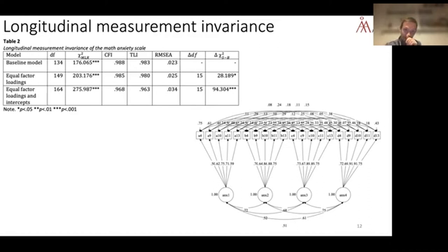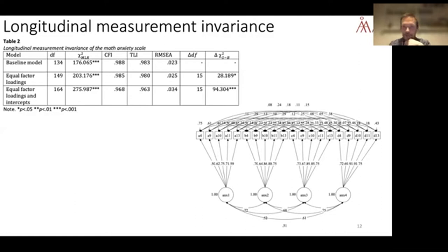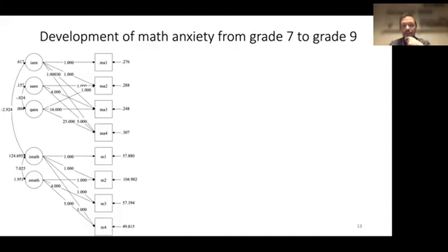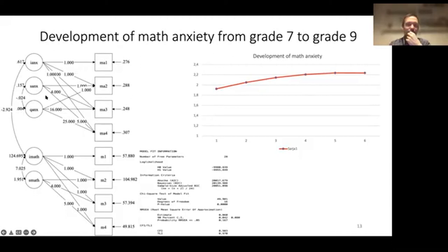An important step in longitudinal research is checking that the measure works in a similar way across all time points — that it isn't measuring something slightly different over the years, which could make changes in means simply reflect measurement error. We checked this and it was fine. We then ran a latent growth curve model for both anxiety and performance.